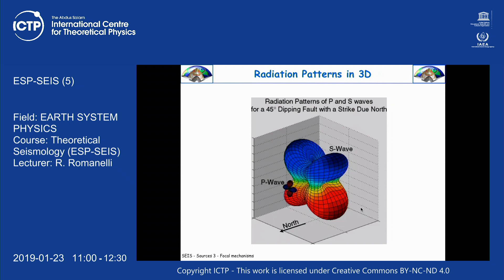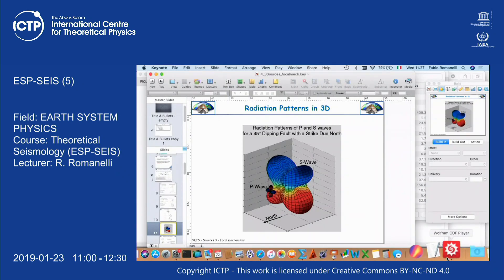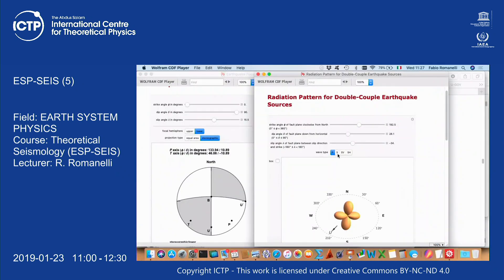Just to remind you that the radiation pattern is a 3D object — I use this picture, which is not for our fault because this one is 45-degree dipping — just to show how complementary P and S are. Look at P, look at S, look at the positive and negative, and how much larger the S radiation pattern is compared to P. In 3D it is working — that's for P, that's for S. You can rotate it with strike, dip, and rake. When you change these three angles you change the fault and move to different positions of the radiation pattern.